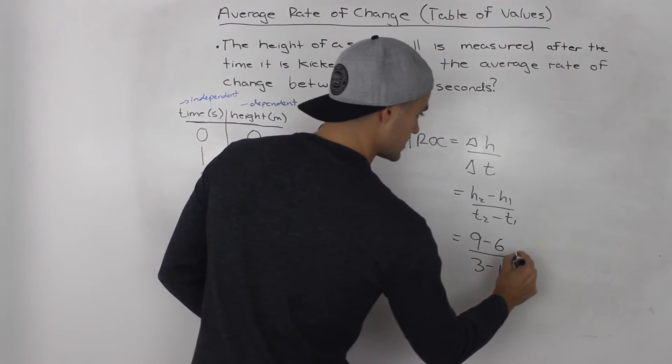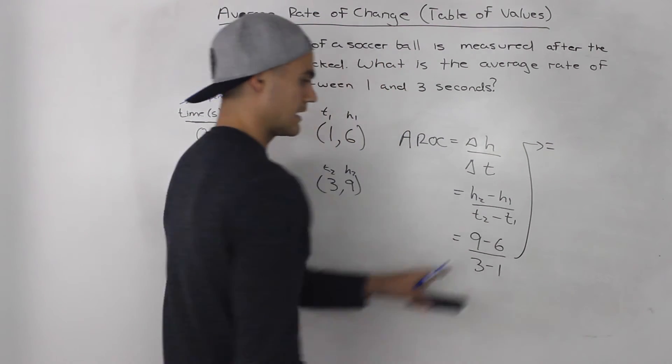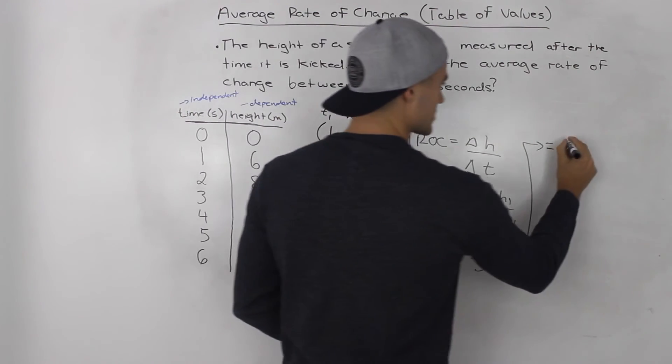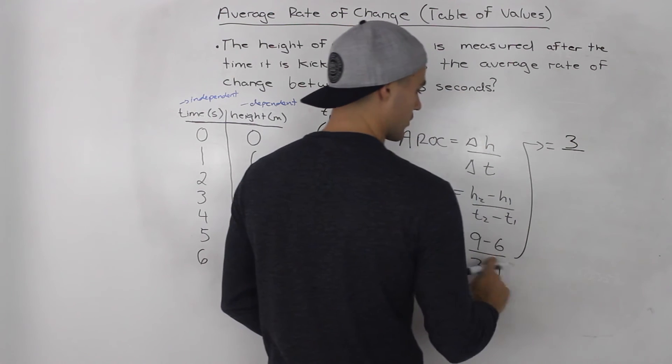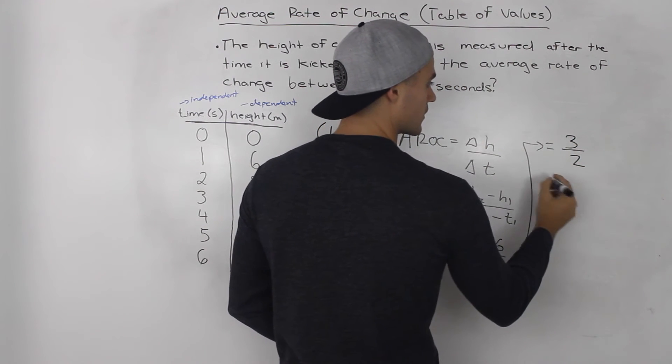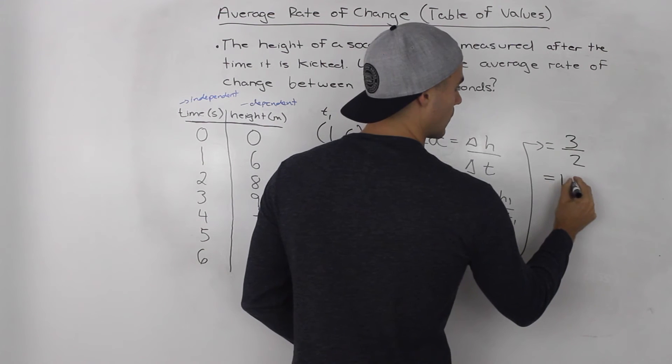Let's continue it up here. 9 minus 6 is 3, and 3 minus 1 is 2. So this ends up being 1.5.